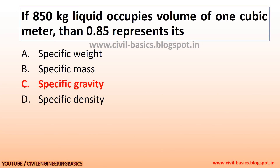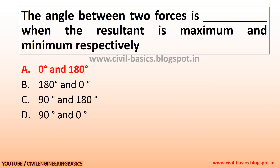If 850 kg of liquid occupies a volume of 1 cubic meter, then 0.85 represents its specific gravity.